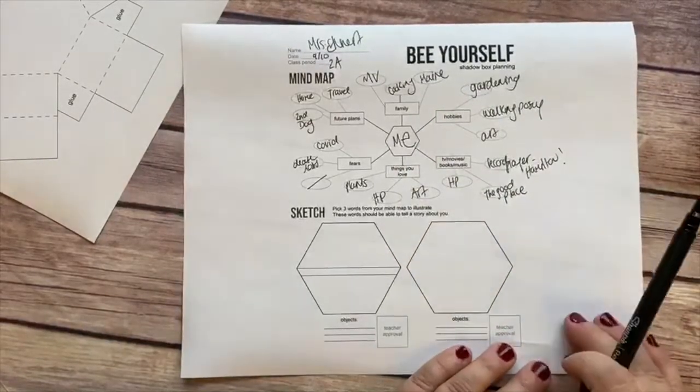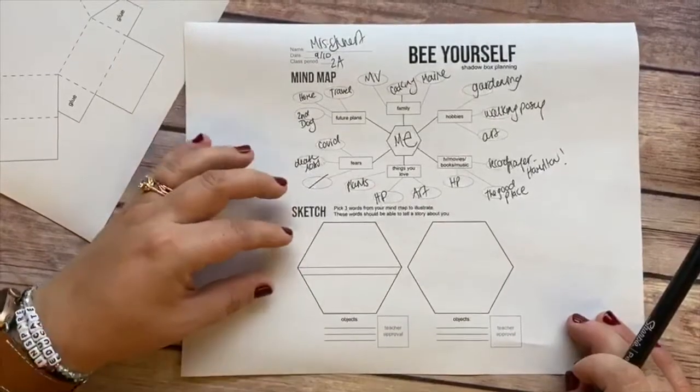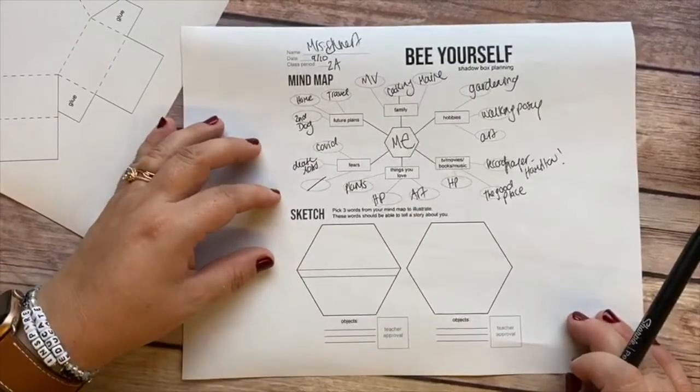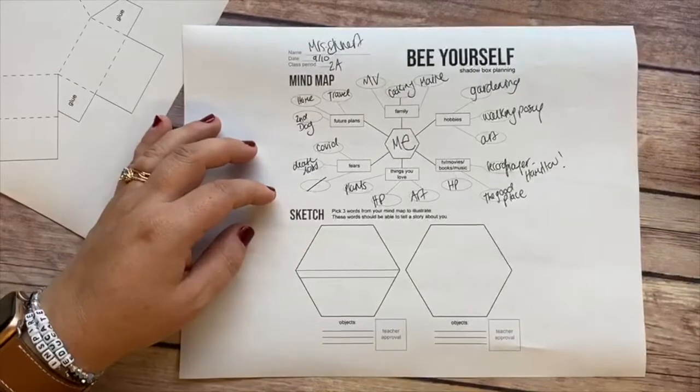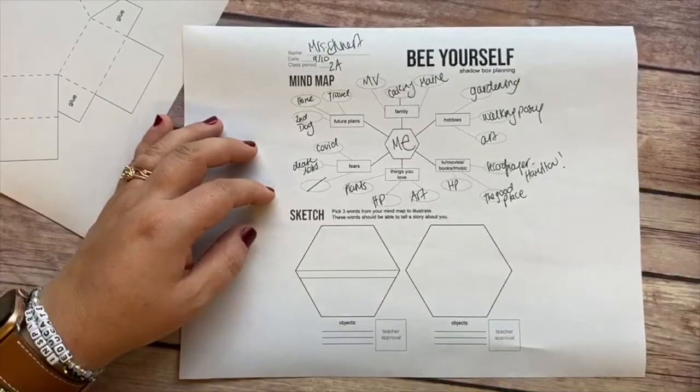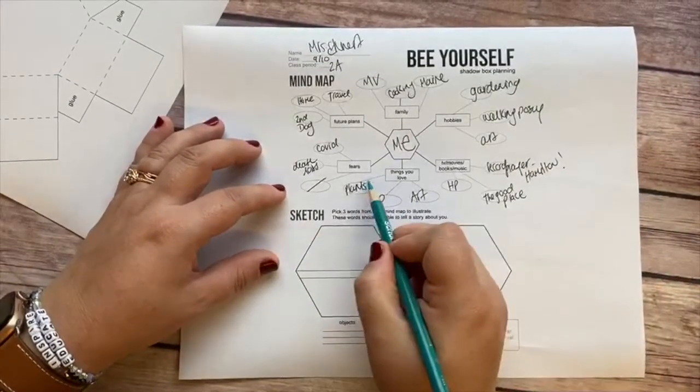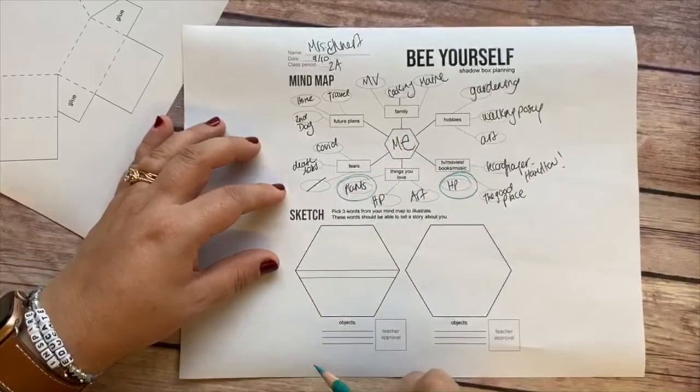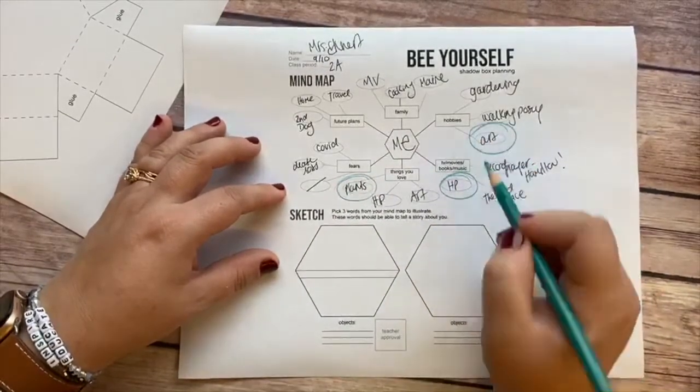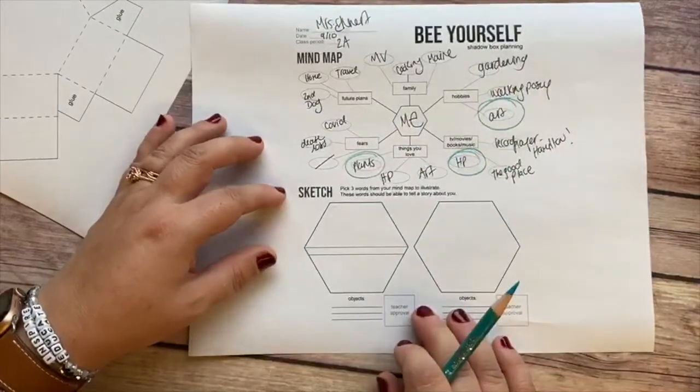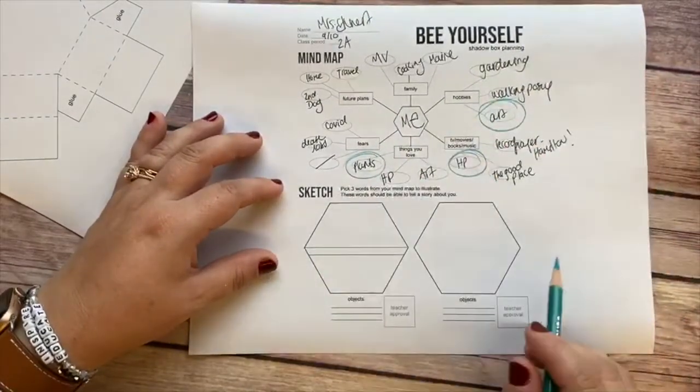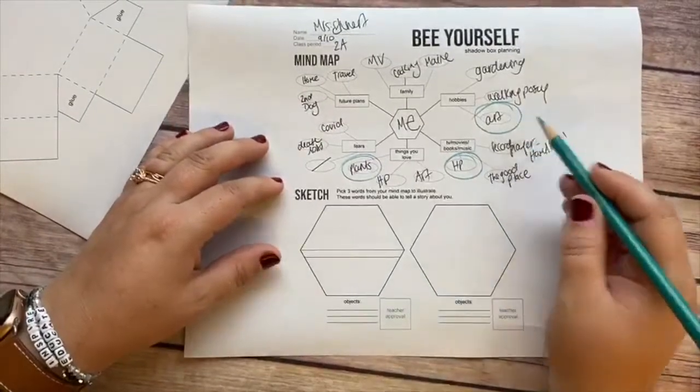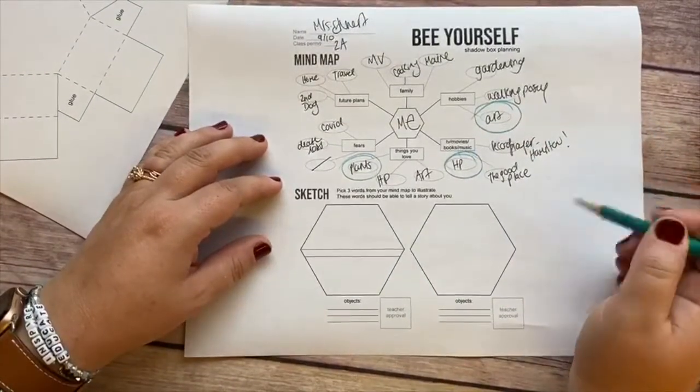So now you're going to pick three words from your mind map to illustrate. Those could be any of the three things that you think stand out the most and are of the most interest to you. So I'm going to circle plants, Harry Potter, and I'll say art. Then you can sketch them anywhere on the paper, you can sketch them in your sketchbook, or you can source images online to illustrate these three things.